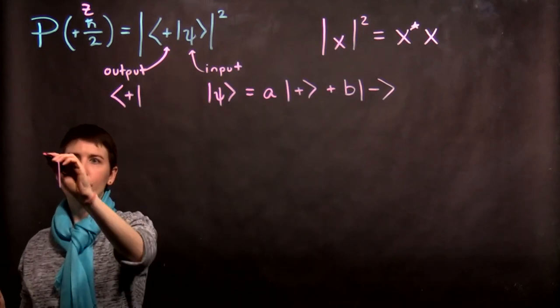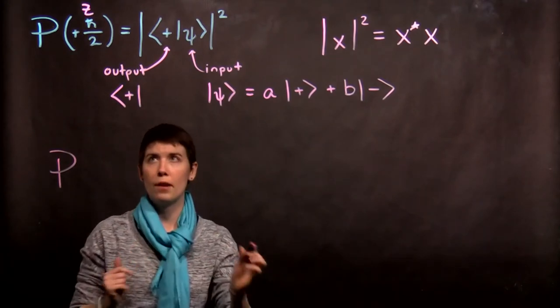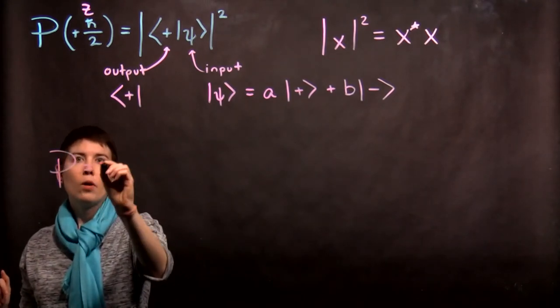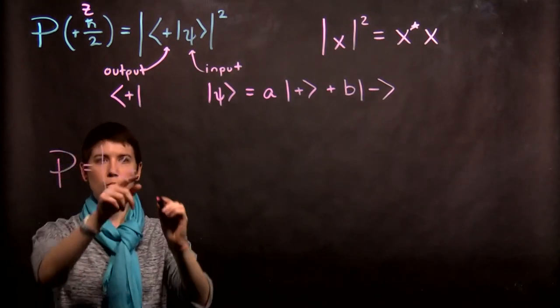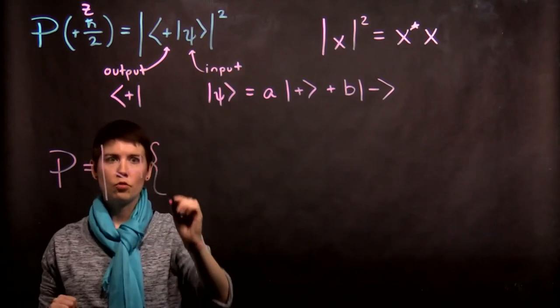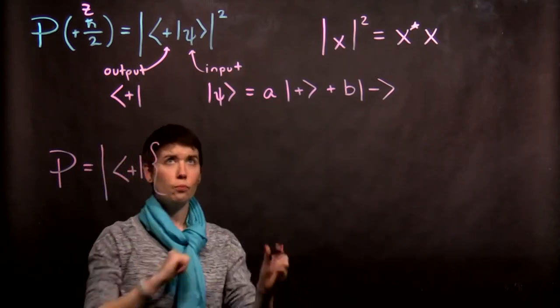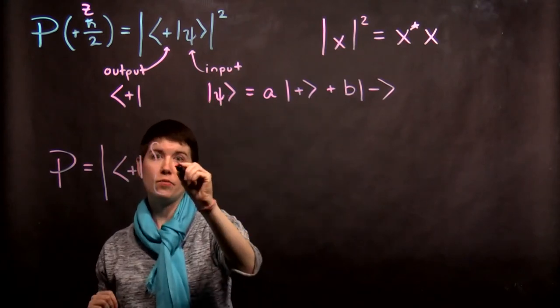And let's see what happens. So my probability, we expect to get a number between 0 and 1. And so the first thing that I have is that spin up state. Now I'm going to draw my